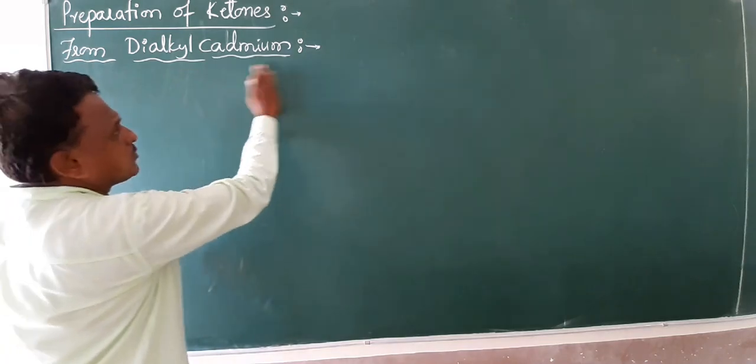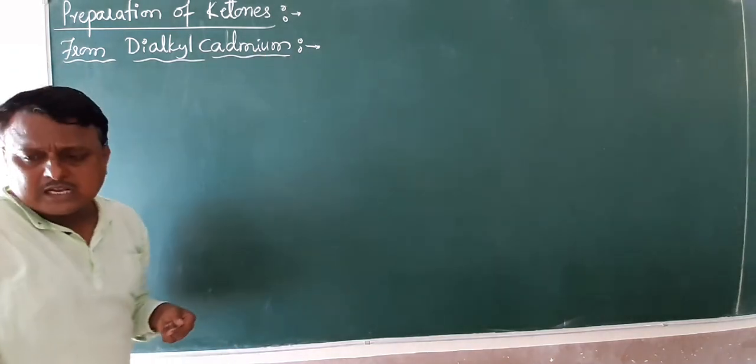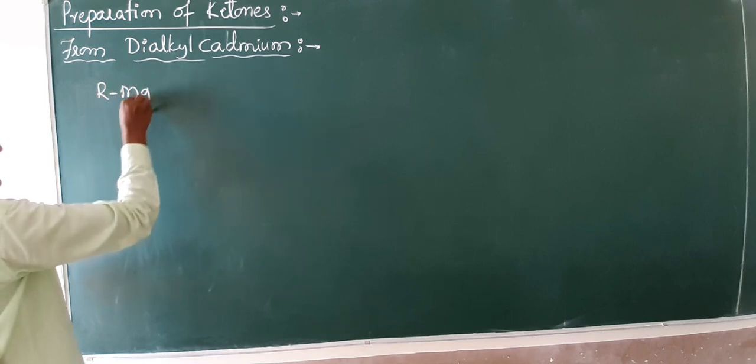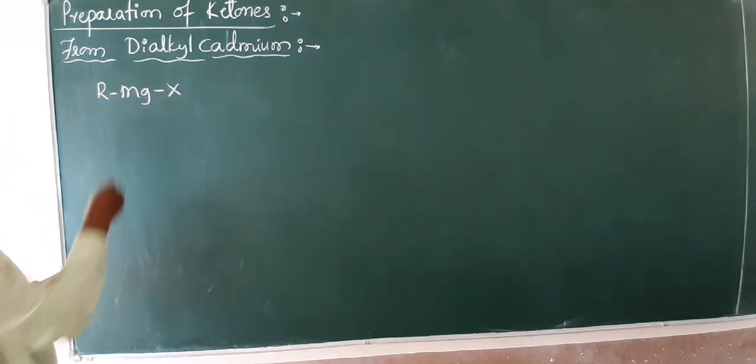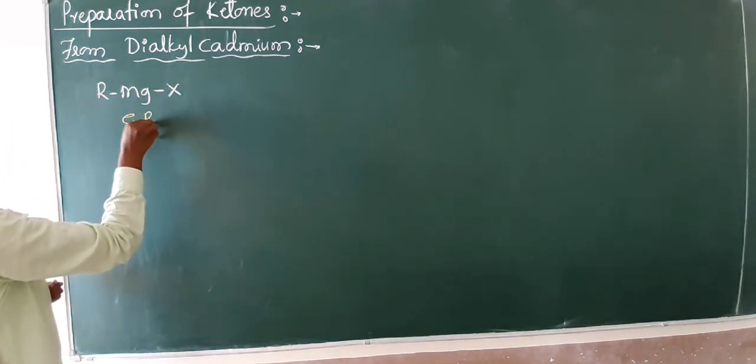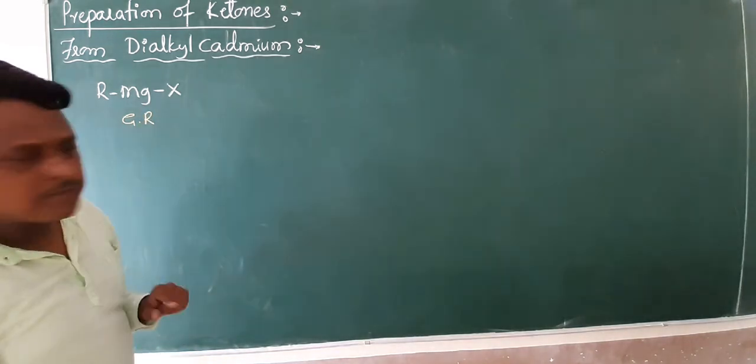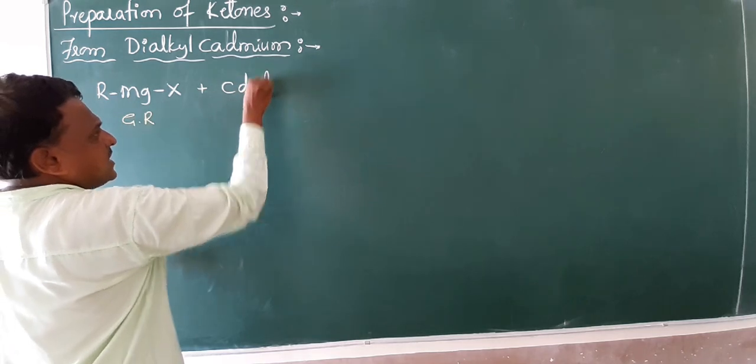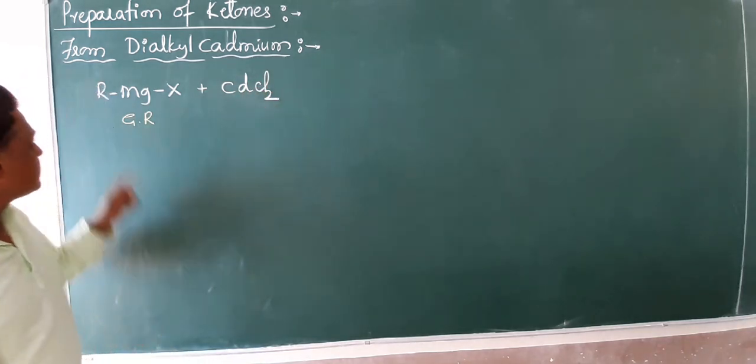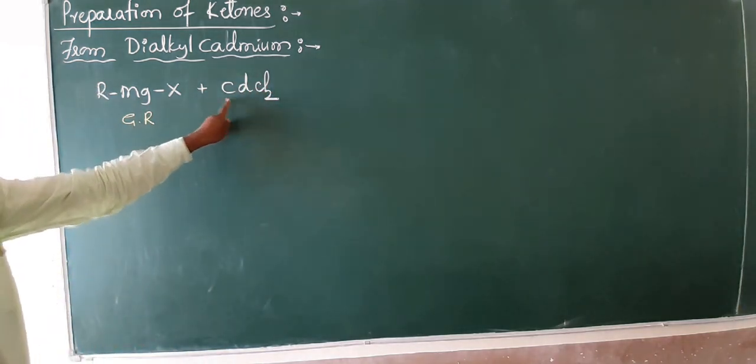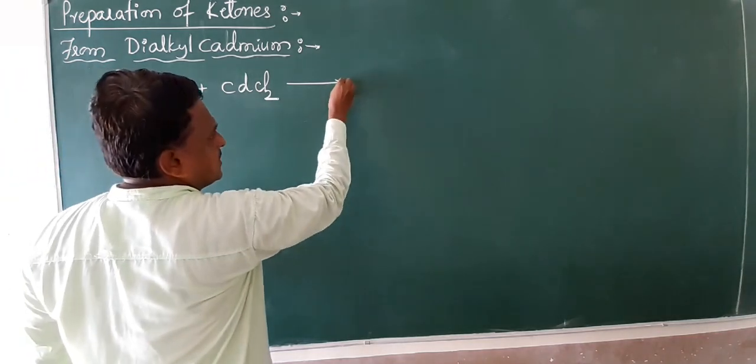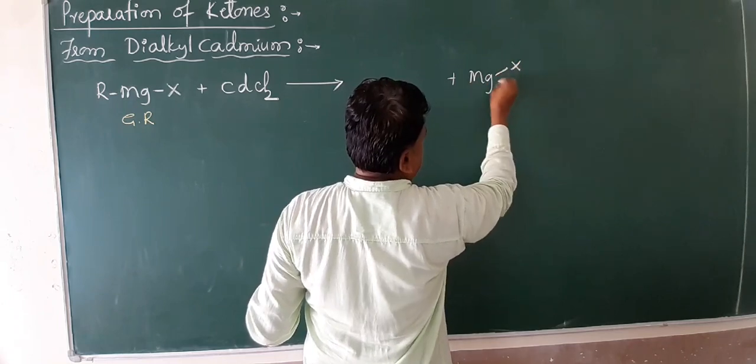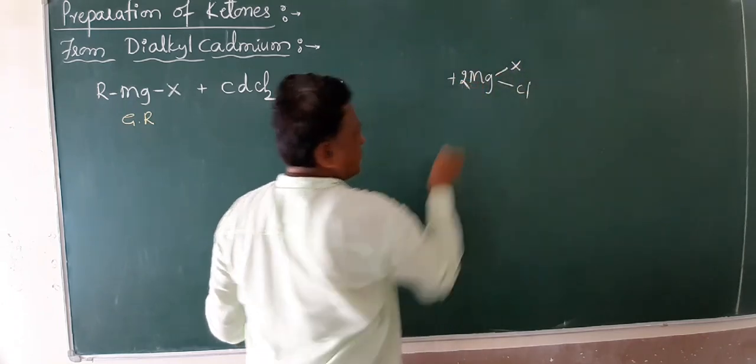How about preparation of ketones from dialkyl cadmium? Friends, keep in your mind R-Mg-X. I think all of you know this R-Mg-X is nothing but Grignard reagent. When Grignard reagent reacts with cadmium chloride, the magnesium salt will come out with 2 moles.